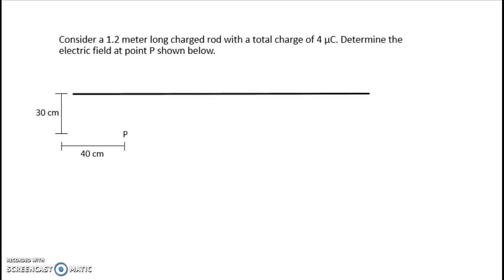Here's the problem we want to solve. We have a charged rod or a charged line of a given length and a given total charge, and we want to determine the electric field at a point P down below the rod. So nothing is located at point P, but we want to determine the electric field at that location.